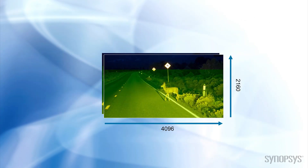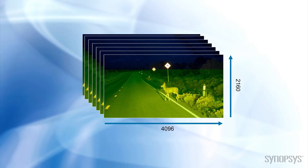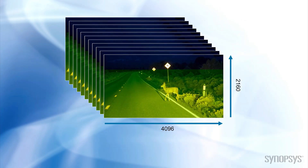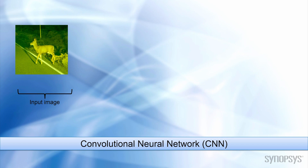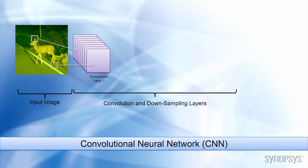Analyzing an image or a video takes a lot of processing power. There are over 8.8 million pixels in a 4K image. At 30 frames per second, the processor must analyze more than 265 million pixels every second. And some vision algorithms, like deep learning convolutional neural networks,